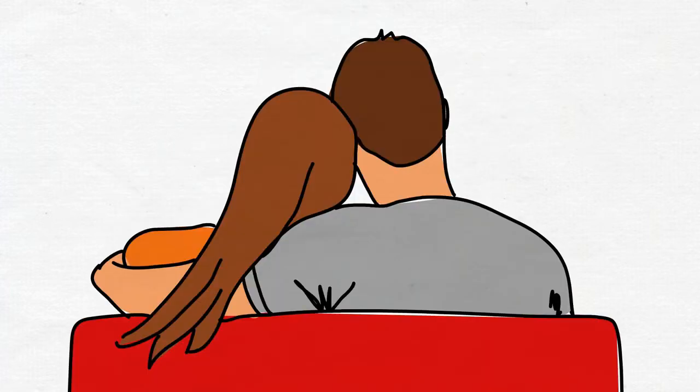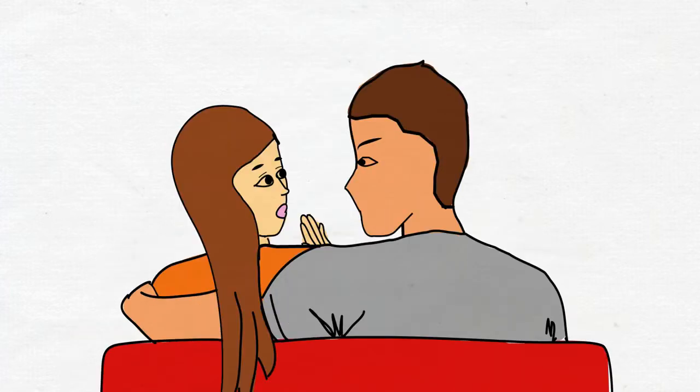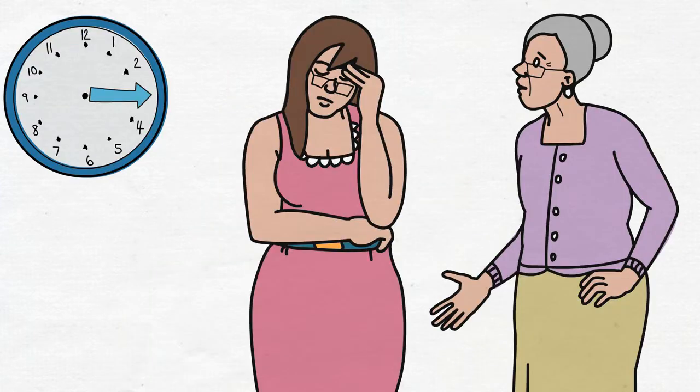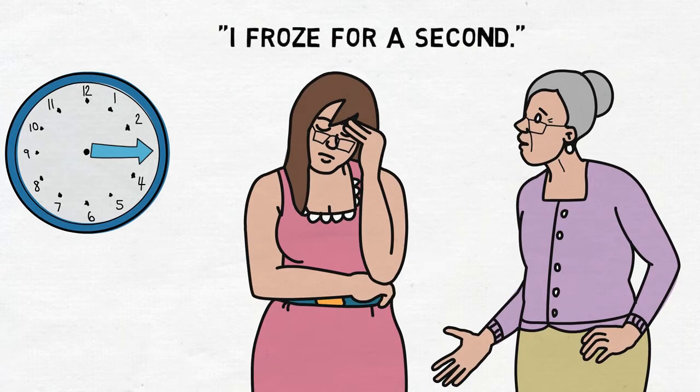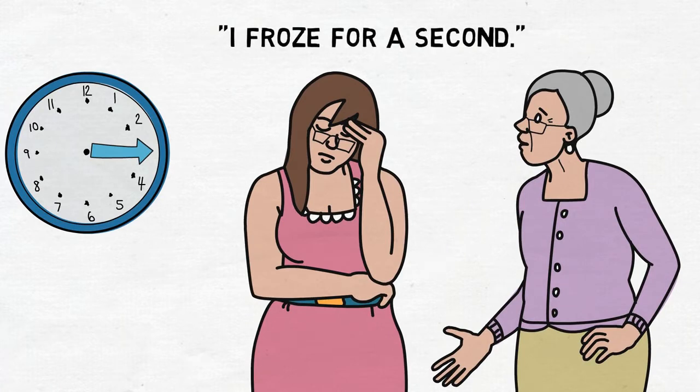Or when the other person doesn't stop doing something sexual, despite clear signals it's unwelcome. It's the moment when an attack is detected. Later, looking back on that moment of detection freezing, people often say, I froze for a second. The potential triggers of detection freezing are limitless, but the response is basically the same.